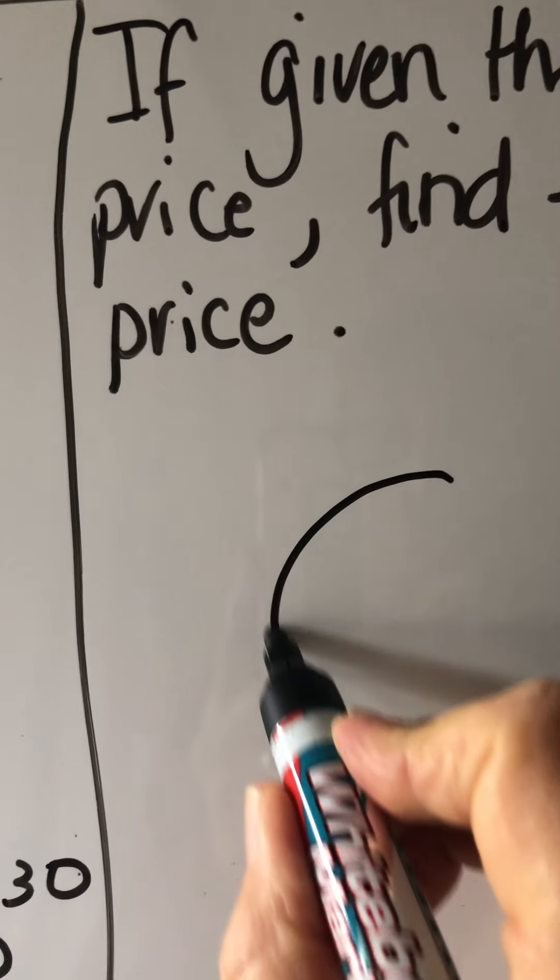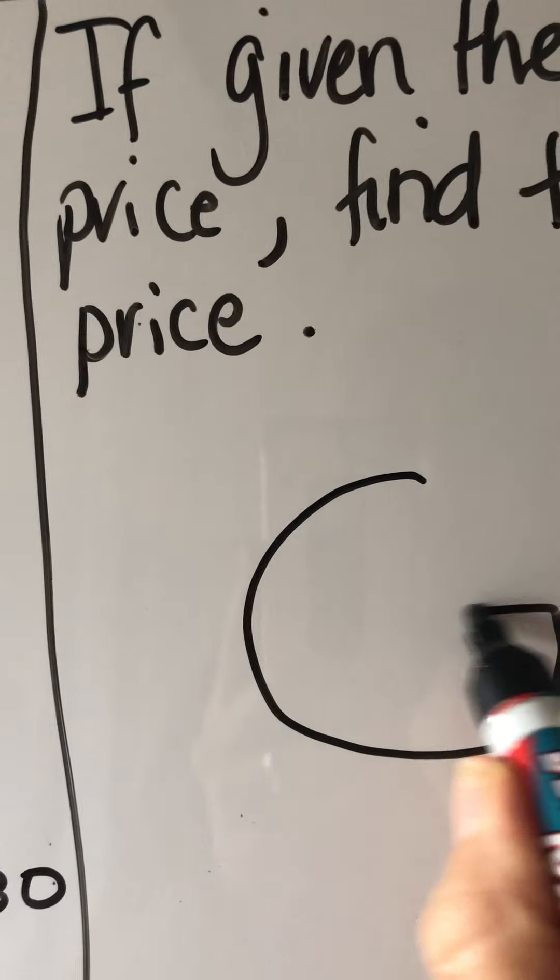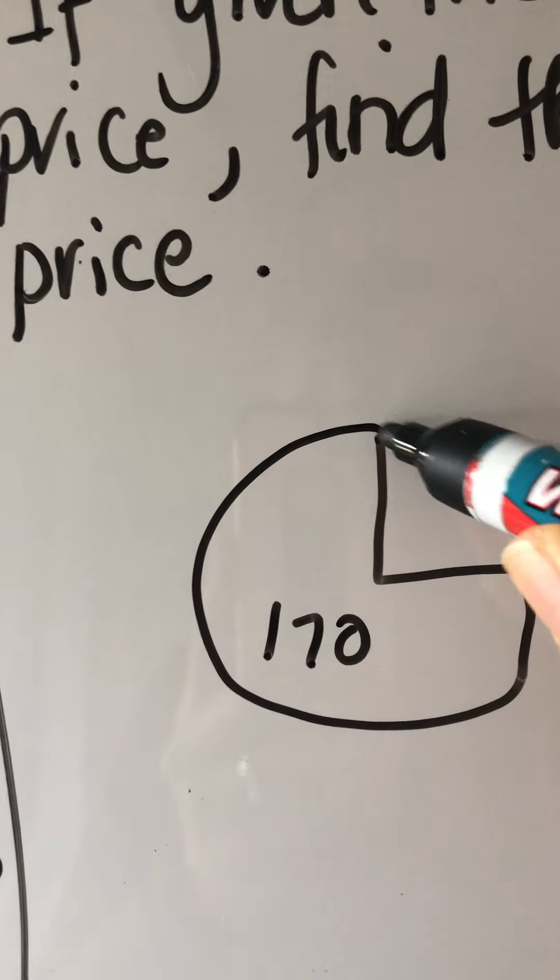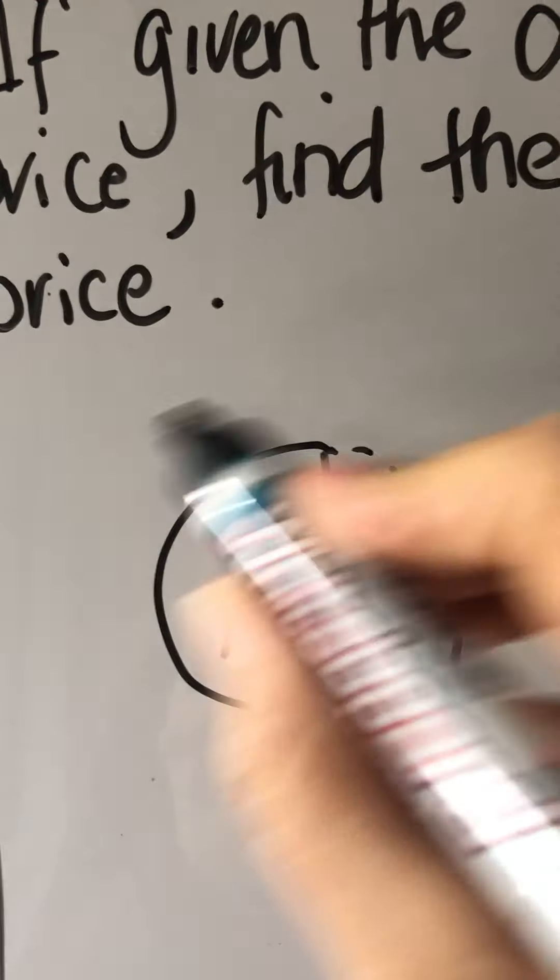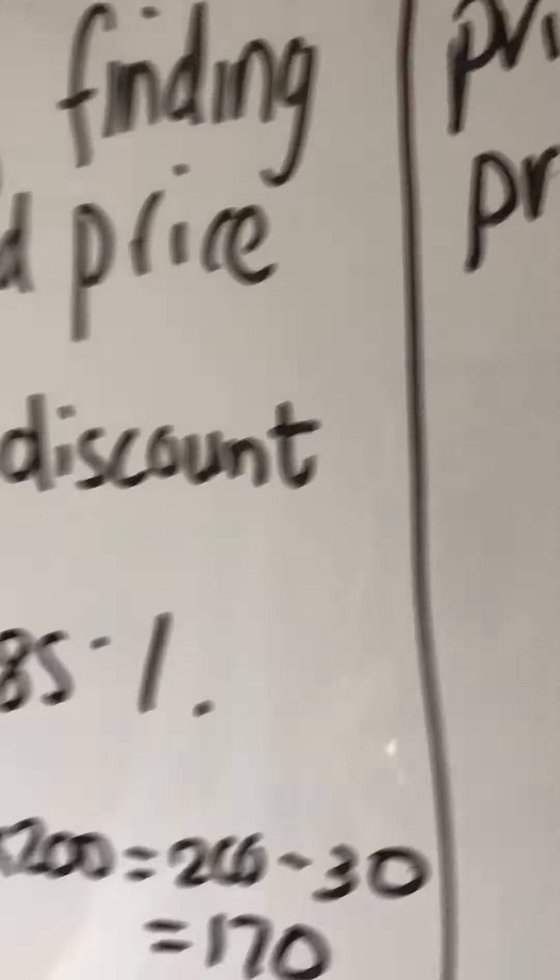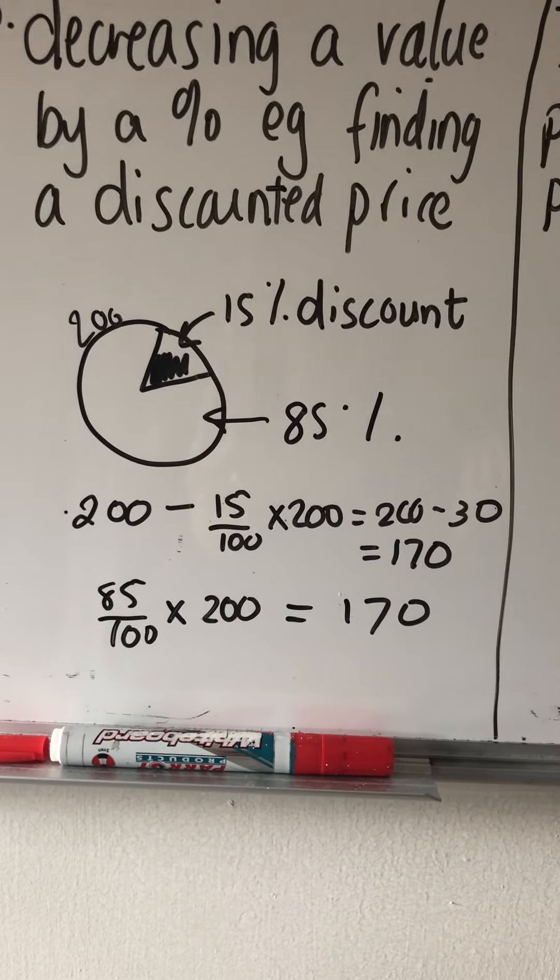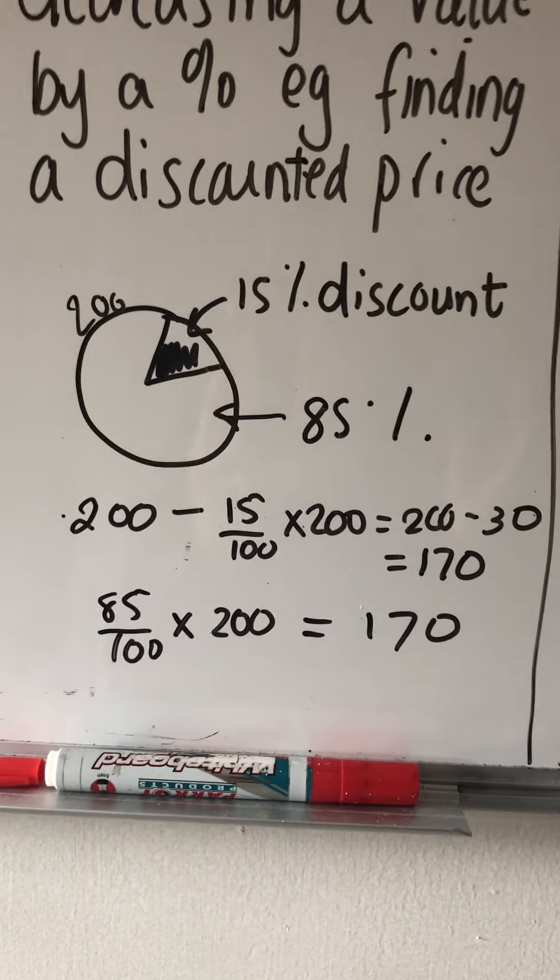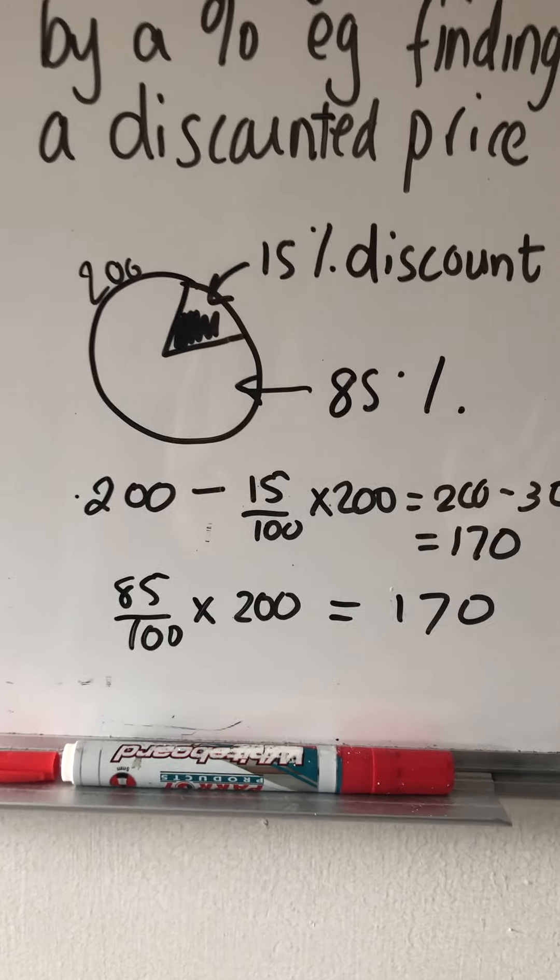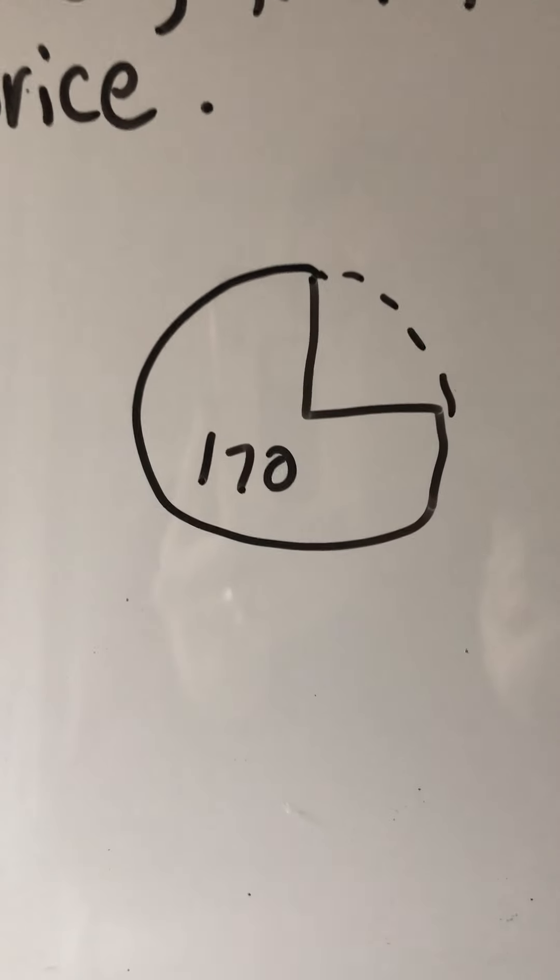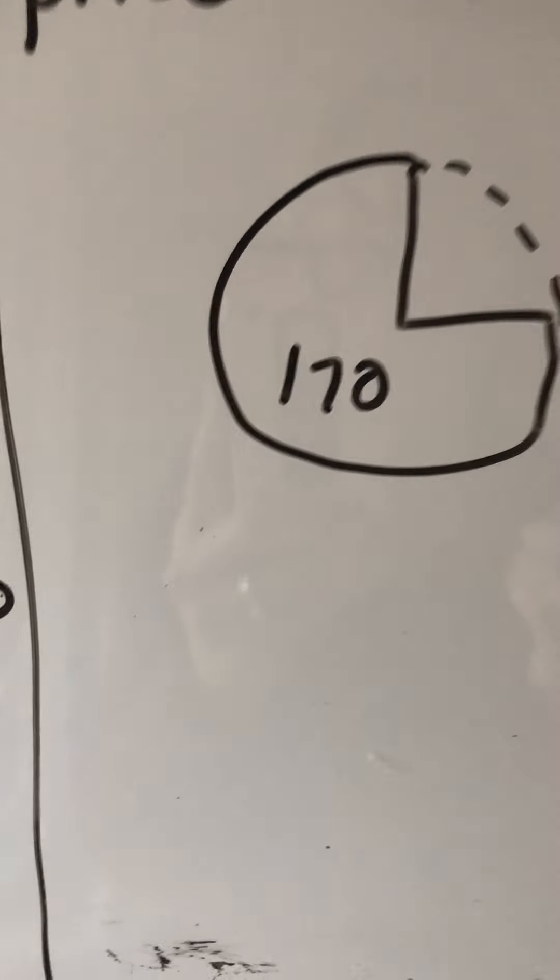So what if you are given that an article costs 170 Rand? What was the original whole price? Now, having just done this example, you actually should have the knowledge that obviously the price is 200. We know the correct answer should be 200 Rand.